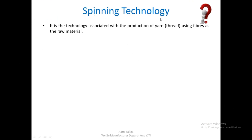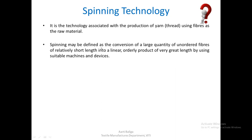What exactly is spinning technology? It is a technology associated with the production of yarn, commonly known as thread, using fibers as the raw material. Spinning may be defined as a conversion of a large quantity of unordered fibers of relatively short length into a linear, orderly product of very great length by using suitable machines and devices.